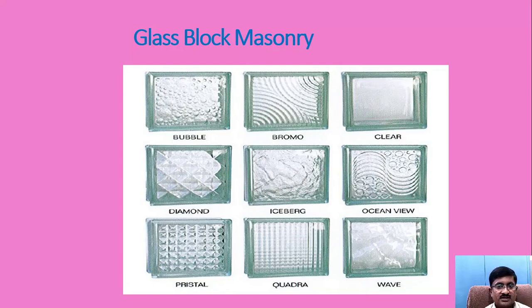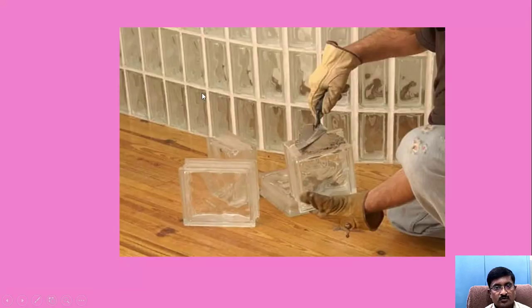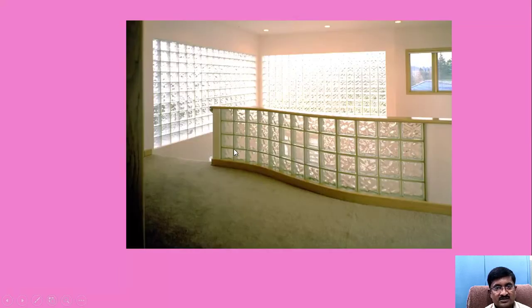The next very special type of masonry we are going to see is glass block masonry. This is popular because of its attractive appearance and its transparent nature — where light is expected, such glass block masonry is constructed. Various patterns are available in these blocks for better aesthetics. You can see how the blocks are used in masonry by providing mortar, and how it is very attractive and how light is achieved in any unit of construction.